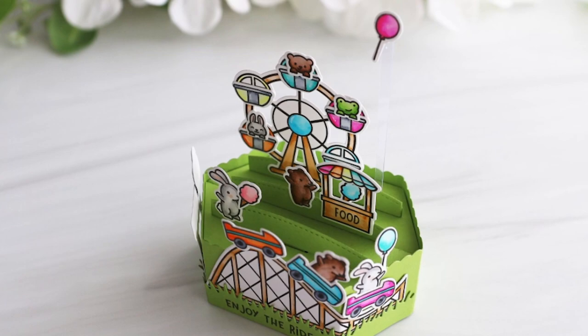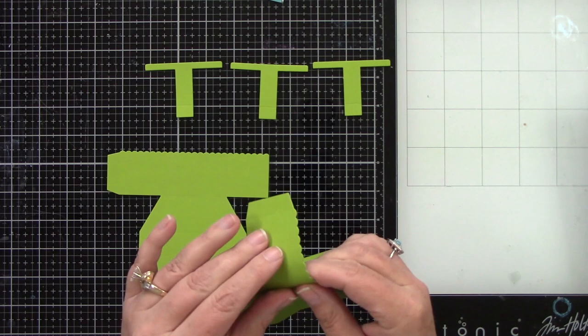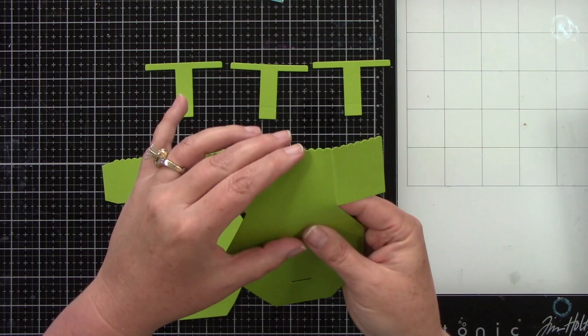It is no secret that this is my favorite interactive die. So you die cut two of the platform pieces and then three of the T pieces. I die cut these from cilantro cardstock and now I'm folding on all of the scored lines.